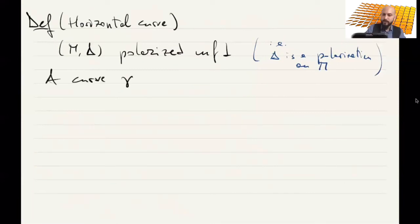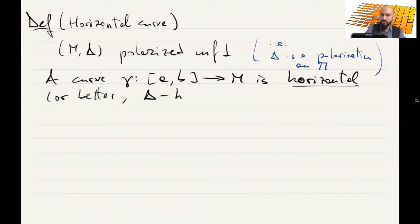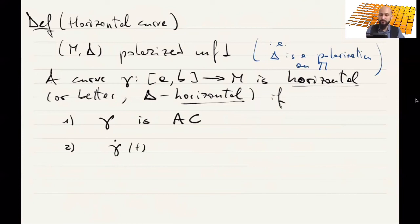A curve gamma on an interval [a,b] valued into M is called horizontal, actually better, one should say delta horizontal or horizontal with respect to delta, if first condition that gamma should be absolutely continuous. So there exists an integral function of which gamma is the integral. And then the function is called the derivative, denoted by gamma dot, which is defined for almost every t.